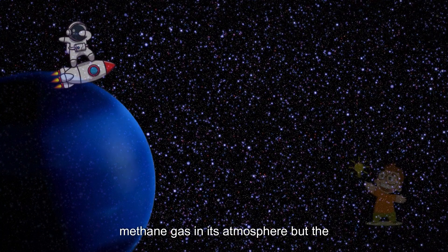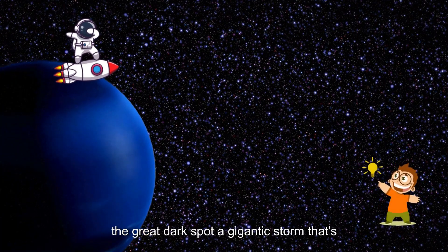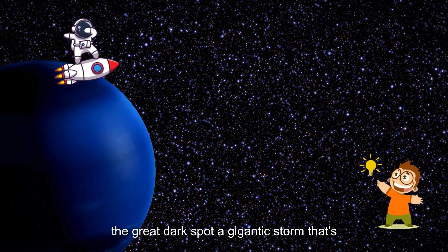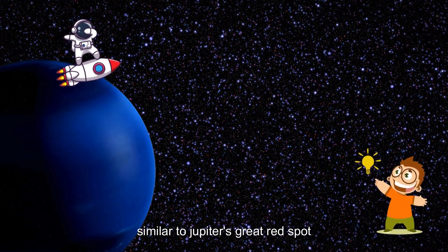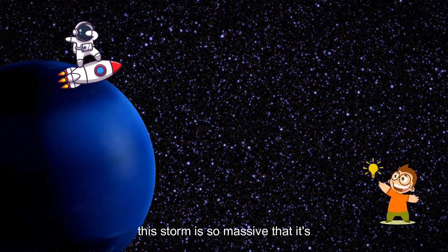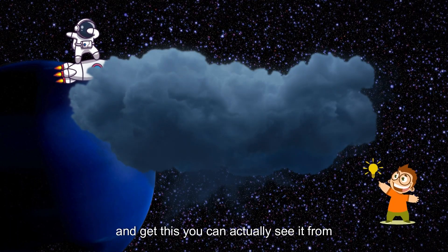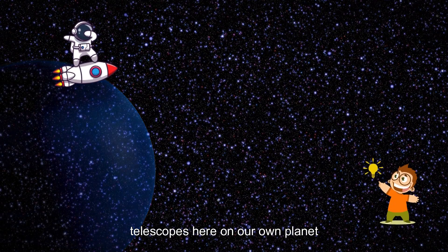Another thing that makes Neptune stand out is its deep blue color, which comes from the methane gas in its atmosphere. But the coolest thing about Neptune has got to be the Great Dark Spot, a gigantic storm that's similar to Jupiter's Great Red Spot. This storm is so massive that it's estimated to be about the size of Earth. And get this, you can actually see it from telescopes here on our own planet.